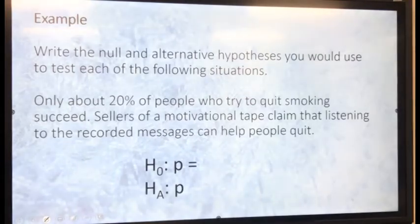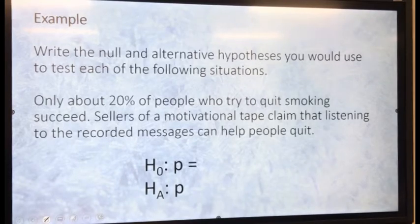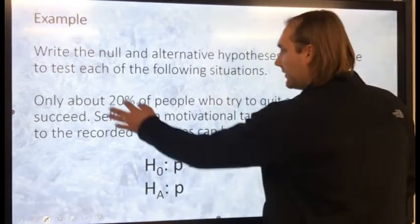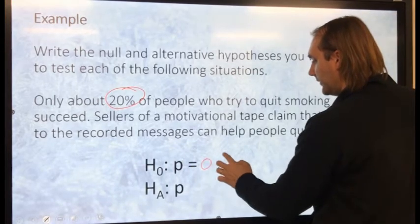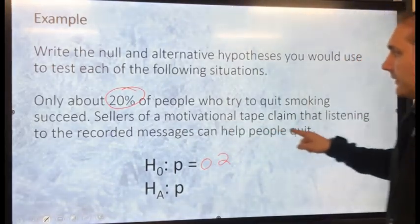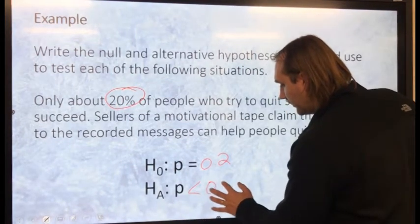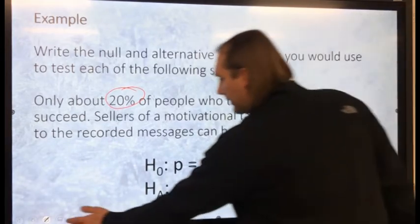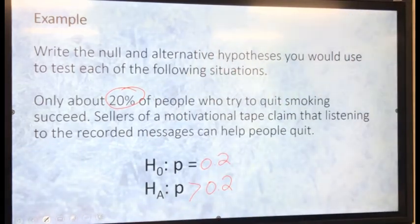Next example: only about 20% of people who try to quit smoking succeed. Sellers of a motivational tape claim that listening to the recorded messages can help people quit. So, what is my H-null? Something that doesn't change — on average, about 20% of people quit smoking, so P equals 0.2. Now, my alternative: I want to see if the tape helps them out, so I want more people quitting than 20%. I would write P greater than 0.2 for my alternative.